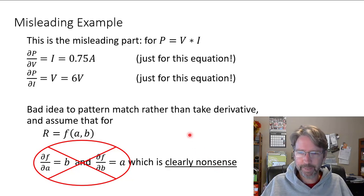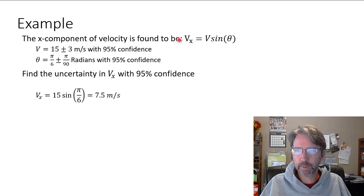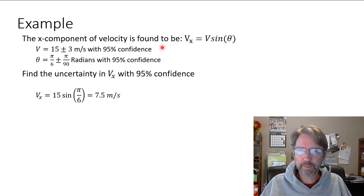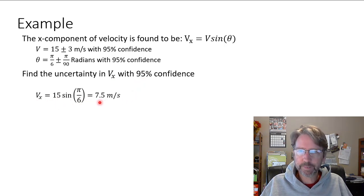Here's a better example without that same pattern. We want the x-component of velocity — maybe from a GPS giving velocity and heading. The equation is vx = v·sin(θ). We have velocity measured at 15 m/s ± 3 m/s and heading angle θ = π/6 ± π/90 radians — keep everything in radians for calculus. Both are at 95% confidence. We want the uncertainty in vx with 95% confidence. First, vx = 15·sin(π/6) = 7.5 m/s.